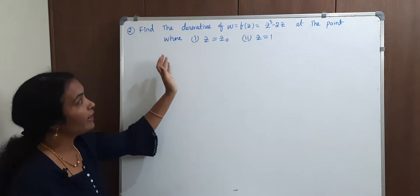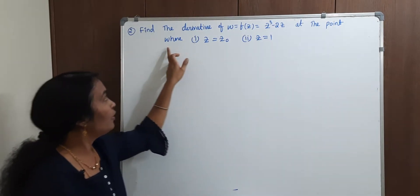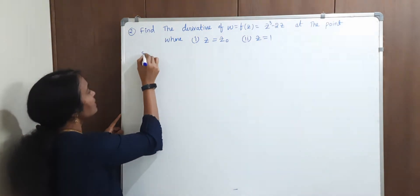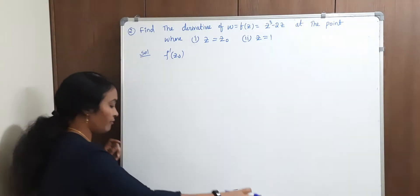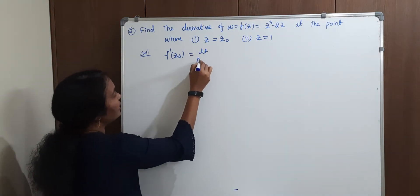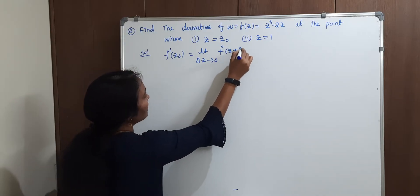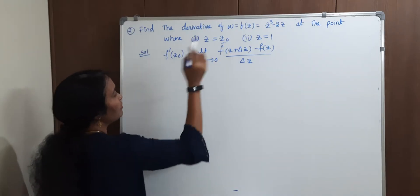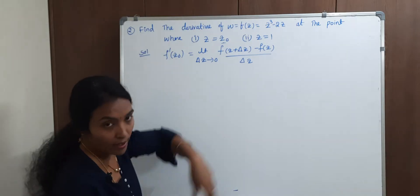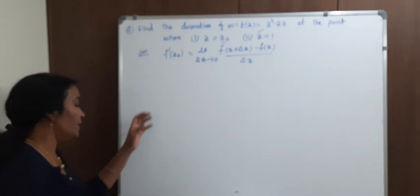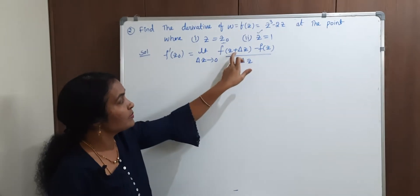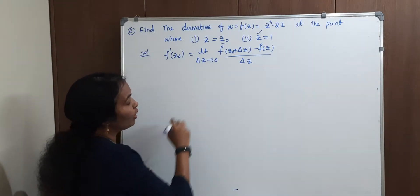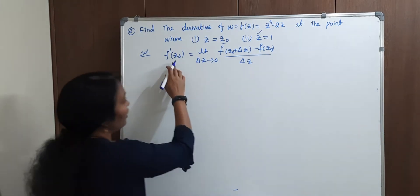Now look at this problem: find the derivative of f of z equal to z cube minus 2z at the point z equal to z naught, that is z equal to 1. The definition is: f dash of z naught equal to limit delta z tends to 0, f of z naught plus delta z minus f of z naught divided by delta z. First we find the general derivative, then we substitute z equal to 1.